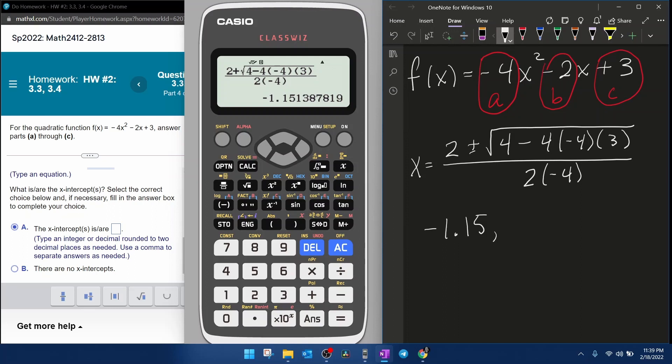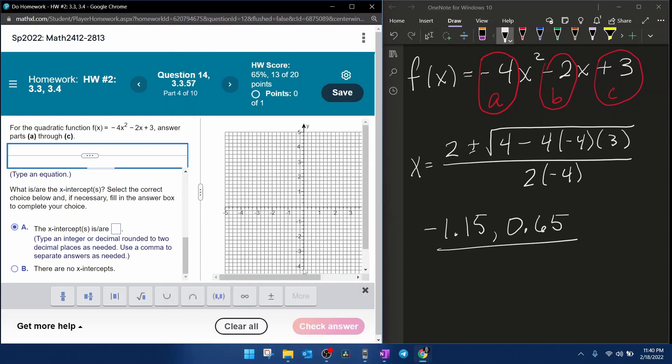Now, to get the other x-intercept, we're simply going to scroll back through all of the stuff we typed in. And here at the very beginning, where it says two plus, we're going to change that to minus. And hitting the SD to force the decimal gives us our other x-intercept of 0.65. Those are our two x-intercepts rounded to two decimal places.